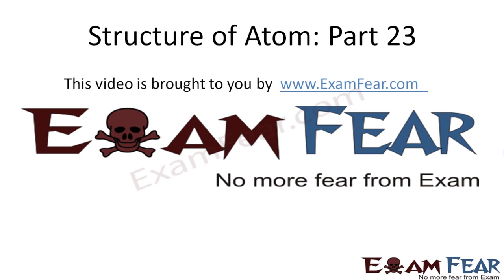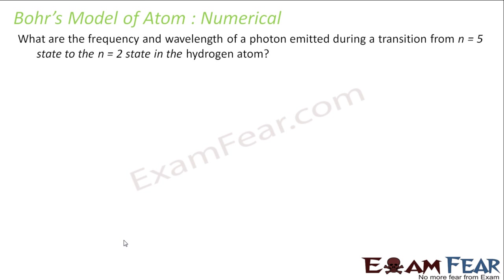Hello friends. This video on structure of atom part 23 is brought to you by examfier.com — no more fear from exam. Before watching this video, please make sure that you have watched part 1 to part 22. So the question is: find the frequency and wavelength of a photon emitted during transition from n equal to 5 to n equal to 2, that is the Balmer series in hydrogen.